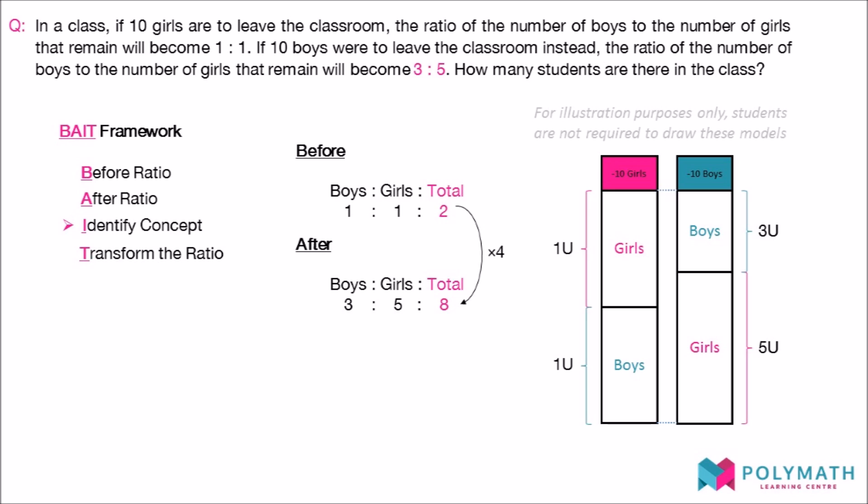We then move on to the last step of the BAIT framework by transforming the ratios. As the total number of units should be the same for both ratios, we transform the ratio according to this total. We find the lowest common multiple of 2 and 8, which is 8 itself.